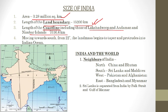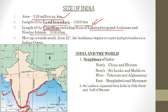Moving south from 22 degrees, the landmass begins to taper and protrudes into the Indian Ocean. The Arabian Sea is on the western side, the Bay of Bengal is on the eastern side, and the Indian Ocean is on the southern side. A landform surrounded by water bodies on three sides is known as a peninsula, and India's southern portion forms such a peninsula.